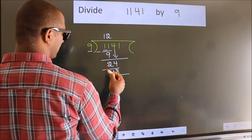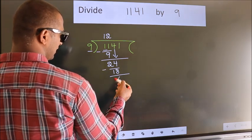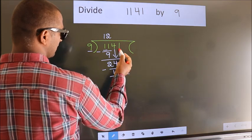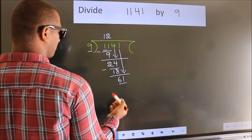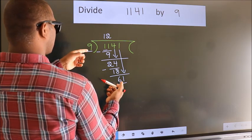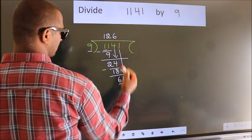Now we subtract. We get 6. After this, bring down the beside number. So 1 down. So 61. A number close to 61 in the 9 table is 9 times 6 equals 54.